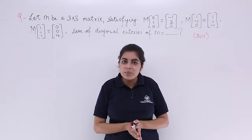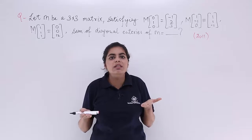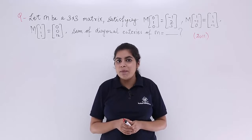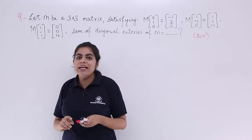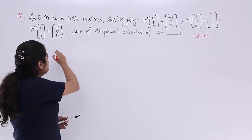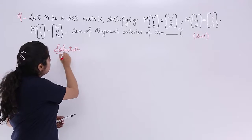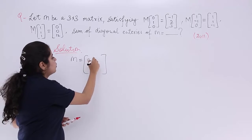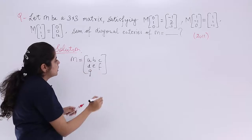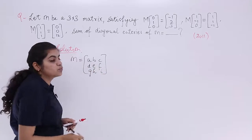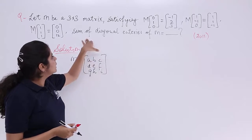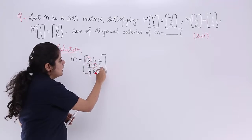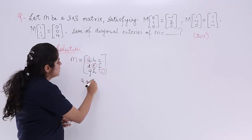First of all, if you want to compute the sum of diagonal entries, you need to find the value of those entries and then take their sum. So let's assume M as a 3×3 matrix with entries A, B, C, D, E, F, G, H, I. The diagonal entries are A, E, and I, so our answer will be A plus E plus I.